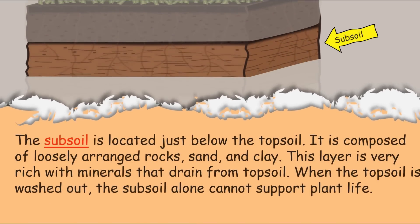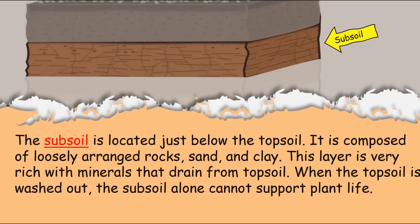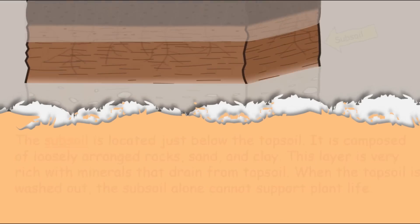The subsoil is located just below the topsoil. It is composed of loosely arranged rock, sand, and clay. This layer is very rich with minerals that drain from the topsoil. When the topsoil is washed out, the subsoil alone cannot support plant life.